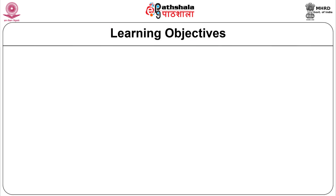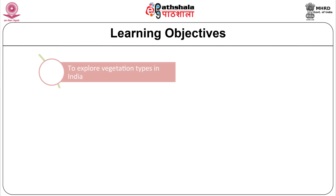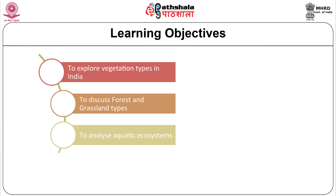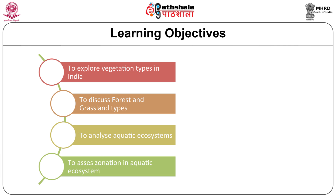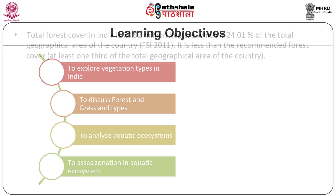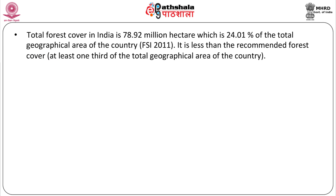In this module, we are going to study about the distribution and ecology of all the ecosystems of India. The learning objectives of this module are: vegetation types of India, forest and grassland types, analysis of aquatic ecosystems, and assessment of zonation in aquatic ecosystems. The total forest cover in India is 78.92 million hectares, which is 24.01% of the total geographical area of the country.